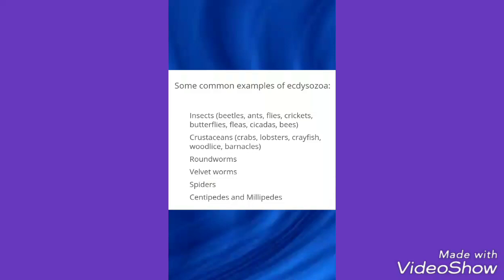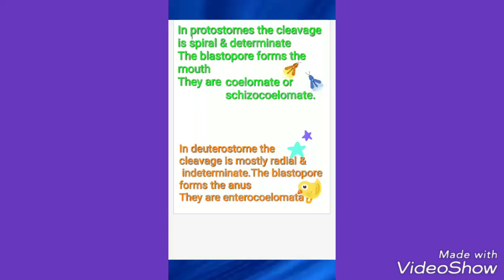Now, the development of protostomes and deuterostomes: in protostomes the cleavage is spiral and determinate, the blastopore forms the mouth, and these are coelomate and schizocoelmate. In deuterostomes, the cleavage is mostly radial and indeterminate, the blastopore forms the anus, and they are enterocoelmate.